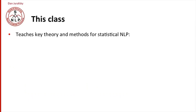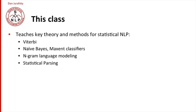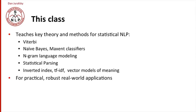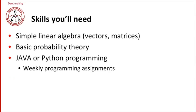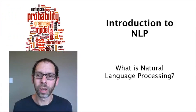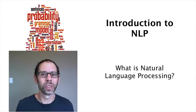Our goal in the class is teaching key theory and methods for statistical natural language processing. We'll talk about the Viterbi algorithm, naive Bayes, and maxent classifiers. We'll introduce n-gram language modeling and statistical parsing. We'll cover the inverted index, TF-IDF, and vector models of meaning important in information retrieval. We'll do this for practical, robust, real-world applications including information extraction, spelling correction, and information retrieval. You'll need simple linear algebra, basic probability theory, and the ability to program in either Java or Python for weekly programming assignments. We're very happy to welcome you to our course on natural language processing and look forward to seeing you in following lectures.